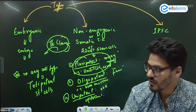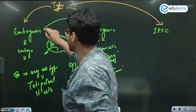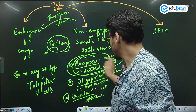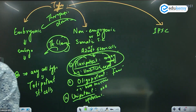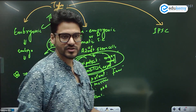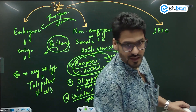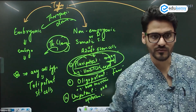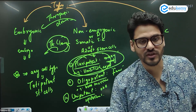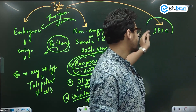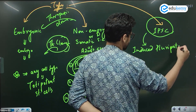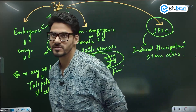Embryonic stem cells can be obtained through therapeutic cloning. But there is another method. We can also create pluripotent stem cells — but my umbilical cord is gone and my parents did not save it. So I cannot retrieve pluripotent stem cells from the umbilical cord. What we can do instead is use the method of iPSC — induced pluripotent stem cells.